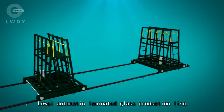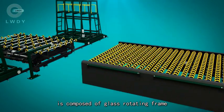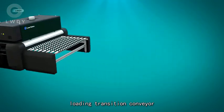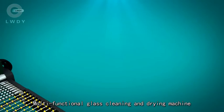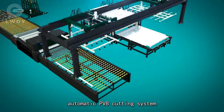Luawei automatic laminated glass production line is composed of glass rotating frame, automatic mechanical glass loading table, loading transition conveyor, multifunctional glass cleaning and drying machine, automatic glass positioning conveyor, and automatic PVB cutting system.